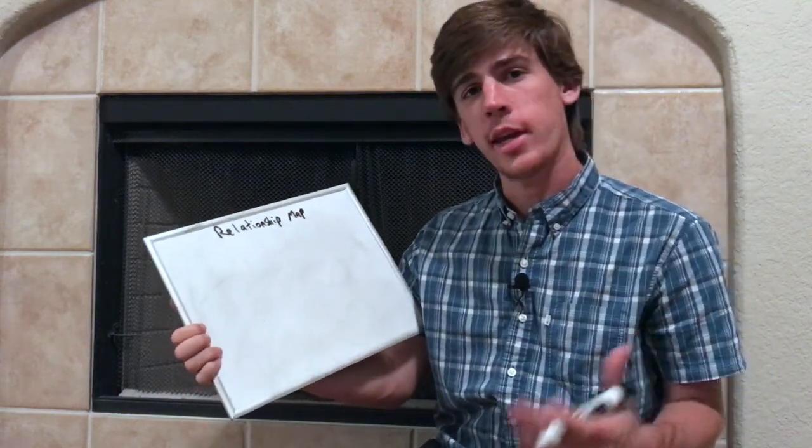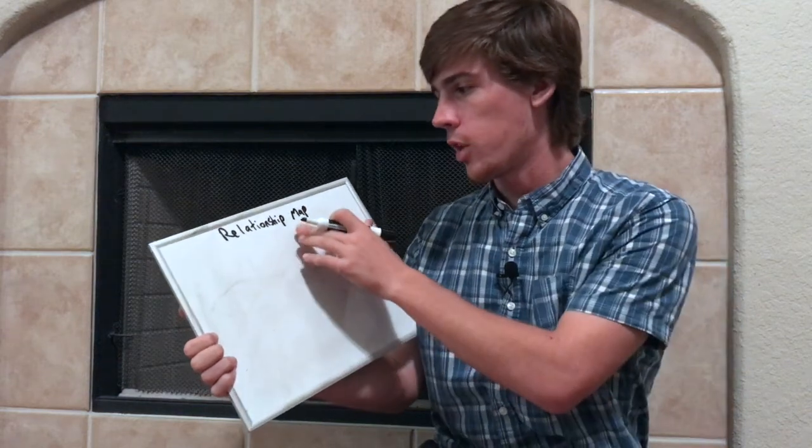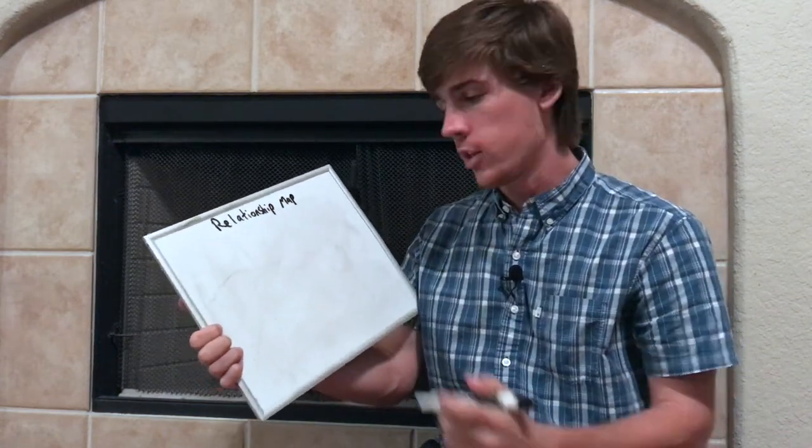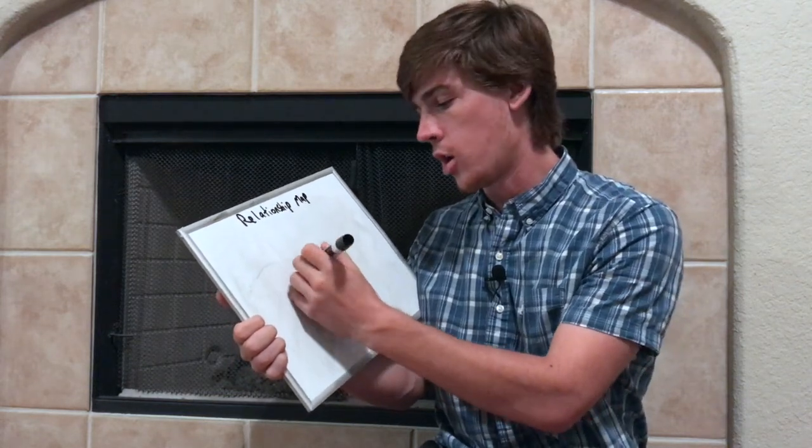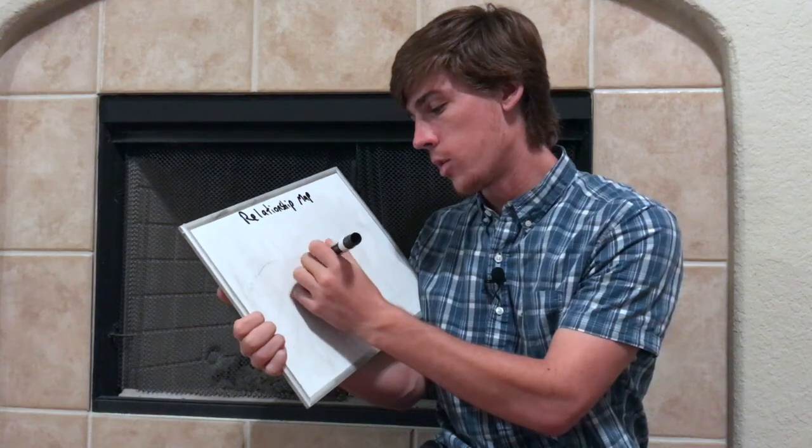I'm going to show us how we can identify who we should share the gospel with, and we like to do this using a relationship map. We're going to make this map first by putting your name in the middle of a sheet of paper, or you can put me. I'm going to put me in the middle of this whiteboard.